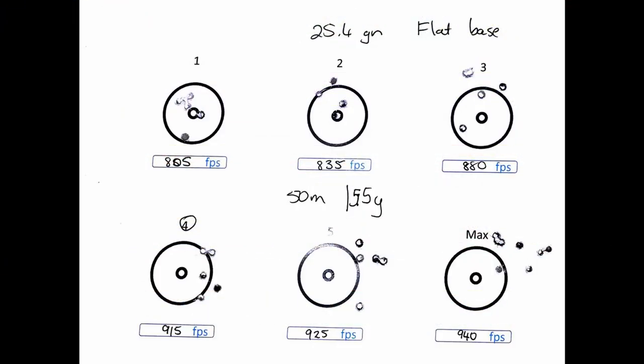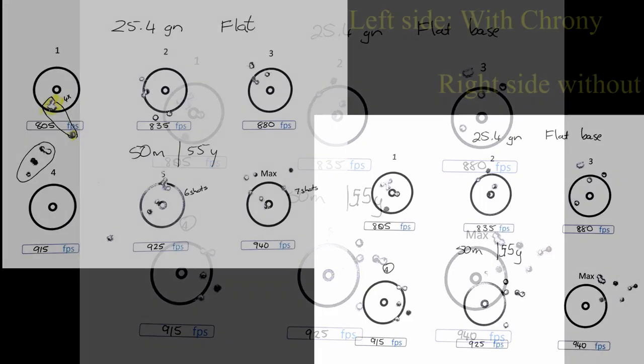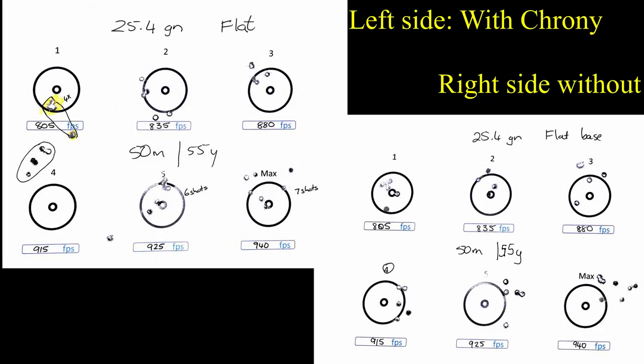The groupings were a lot tighter without the chrony attached to the barrel, with the best grouping actually being at maximum power, 940 feet per second, a 25 millimeter grouping with eight shots. There's some lateral movement, but I think that was more to do with the wind. Interesting to note that the slugs actually perform quite well at slowest speed, which is contradictory to everybody's perception of slugs.